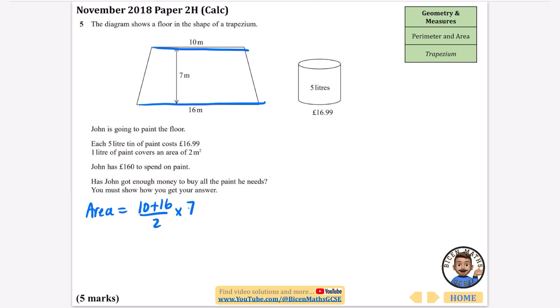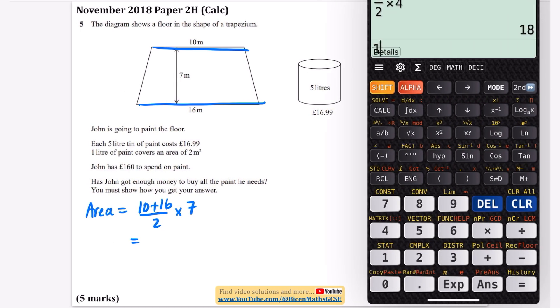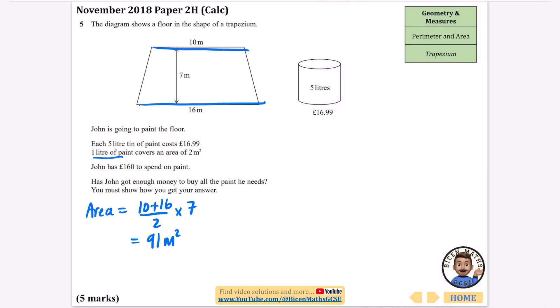For the trapezium area, find the average of the parallel sides: 10 plus 16 divided by 2, multiply by the height which is 7. That's 26 over 2 times 7, which is 91 meters squared. 1 liter of paint covers 2 meters squared. A tin of 5 liters covers 10 meters squared.